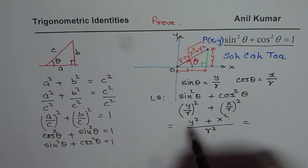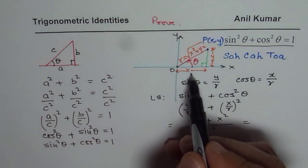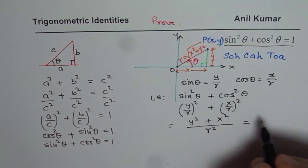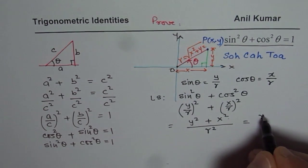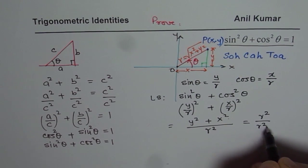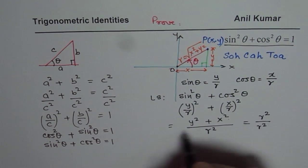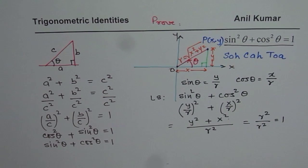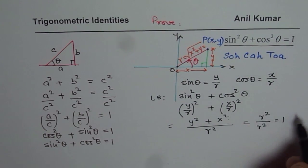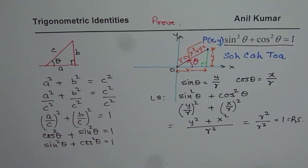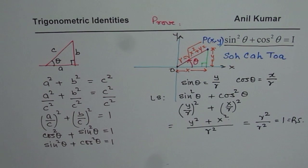Now, what is y square plus x square? Well, you can see here, x square plus y square is r square, so the numerator will be r square. Denominator is already r square. r square divided by r square is indeed 1, which is the right side. So that is how we have to prove identities.